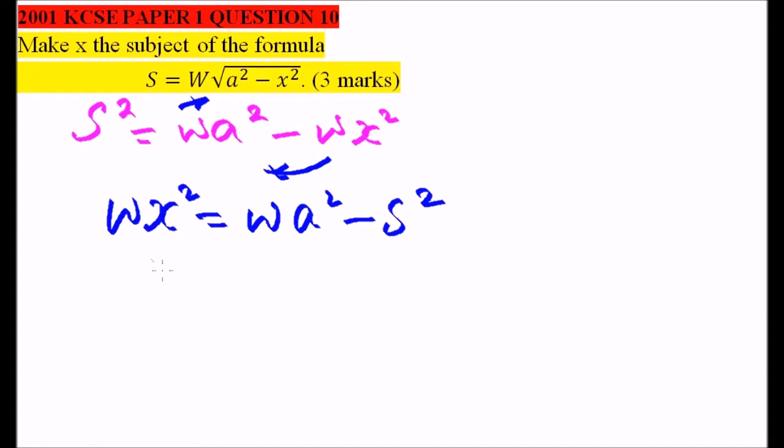From there we can divide both sides by w. So you divide by w, so you have x squared equals, here we can open the bracket and say this is a squared w and w cancels, minus a squared divided by w.